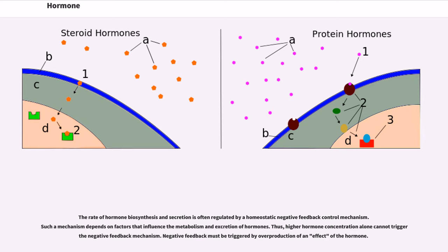Thus, higher hormone concentration alone cannot trigger the negative feedback mechanism. Negative feedback must be triggered by overproduction of an effect of the hormone.